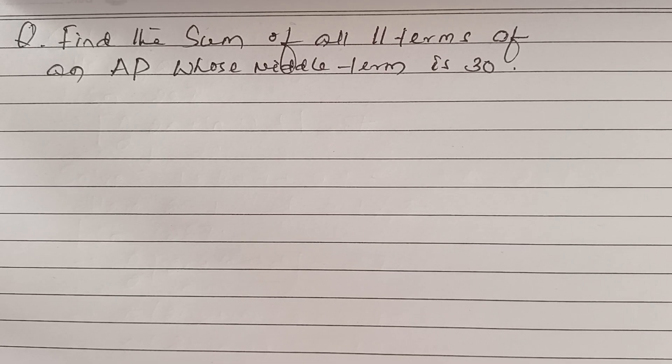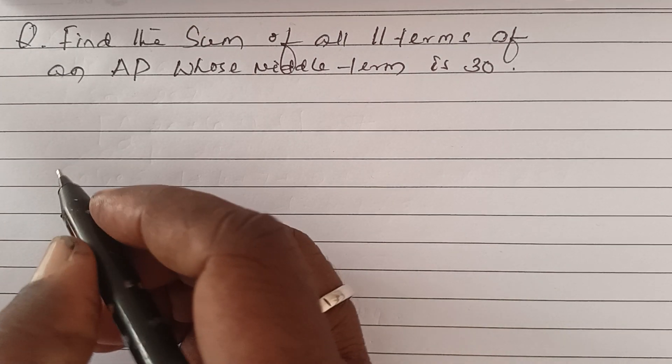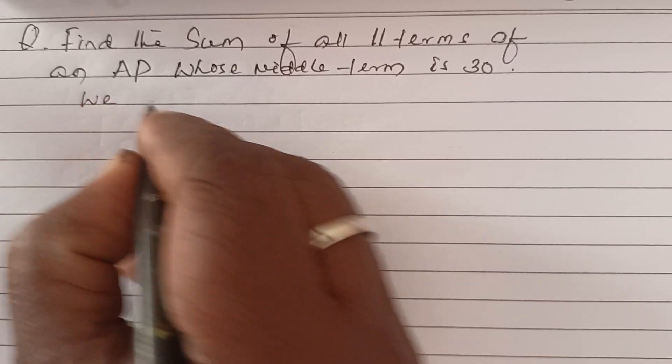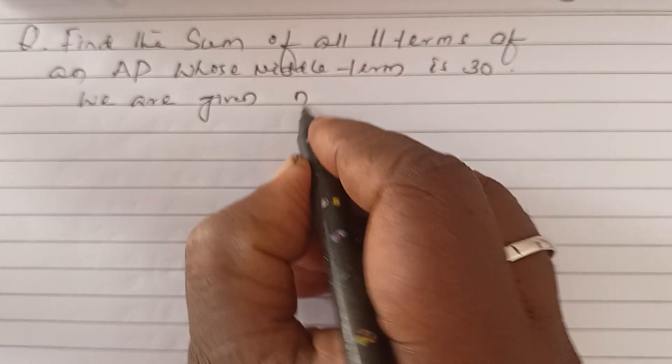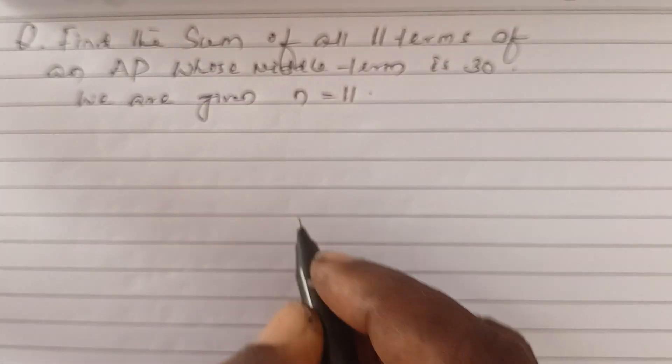Find the sum of all 11 terms of an AP whose middle term is 30. We are given n is equal to 11.